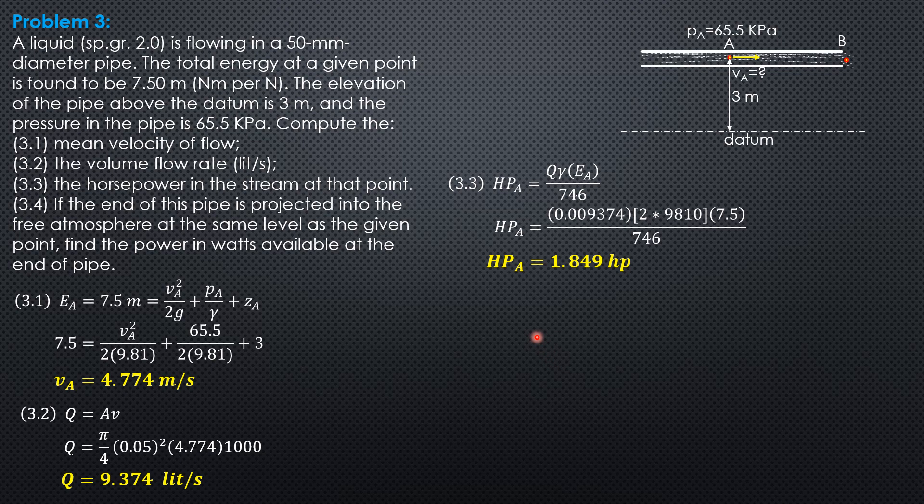Finally, if the end of this pipe is projected into the free atmosphere at point B, then the only energy available at B is the velocity head at B. This is because the available power depends on velocity only, not the datum, since we are calculating the power in watts available at the end of the pipe.